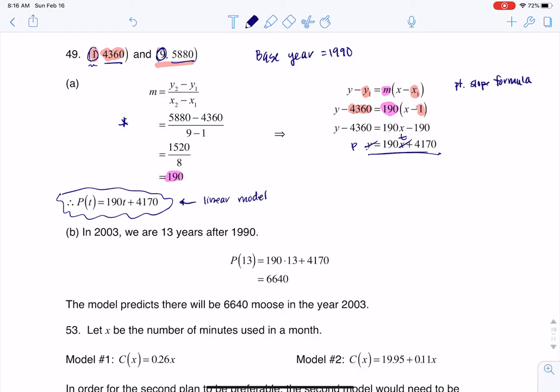And then the last thing it says is, can you figure out the moose population in 2003? So if we're talking about 2003, I want to subtract my base year from that and get 13, because 2003 is 13 years after 1990, and that's what I'm going to plug into my function.